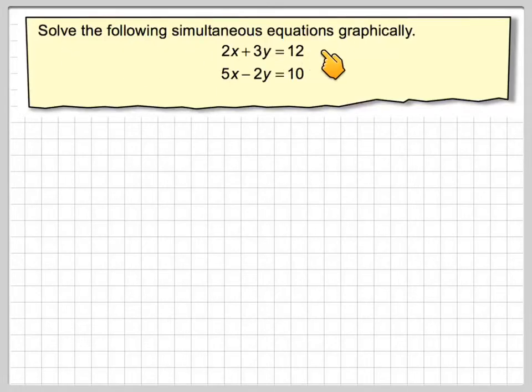Solve the following simultaneous equations graphically: 2x plus 3y equals 12, and 5x minus 2y equals 10.